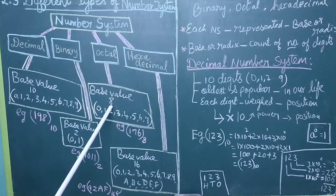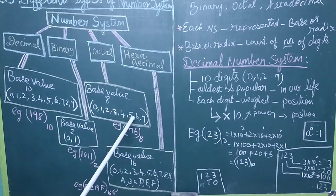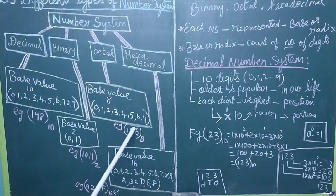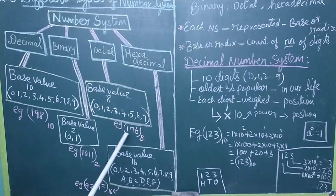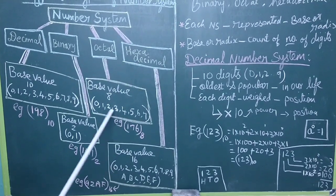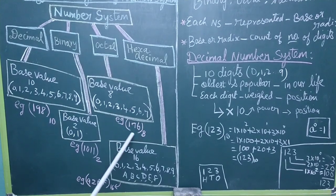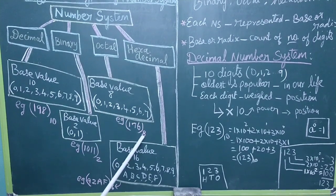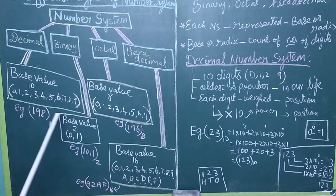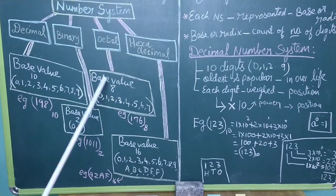The octal number system has a base value of 8. If we use numbers 0, 1, 2, 3, 4, 5, 6, 7 — we combine 8 numbers in this octal number system. For example, 1, 7, 6 combined gives an octal number. 176 in decimal equals 176 in decimal; if the base is 8, it is an octal number.